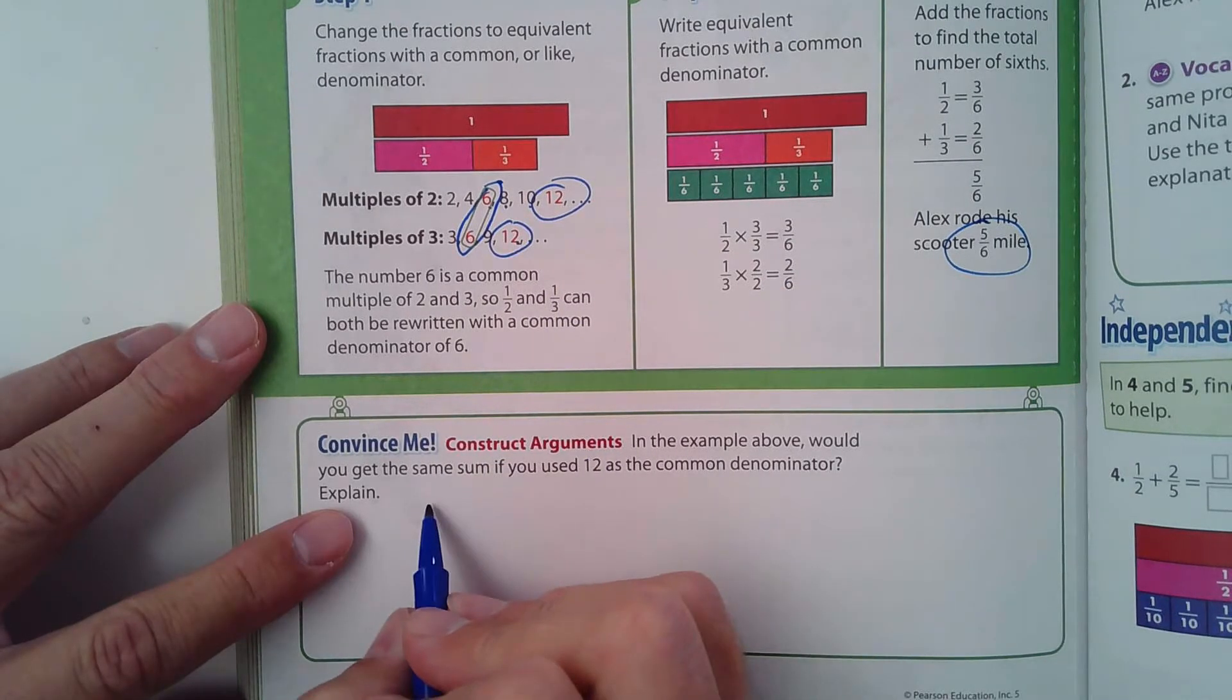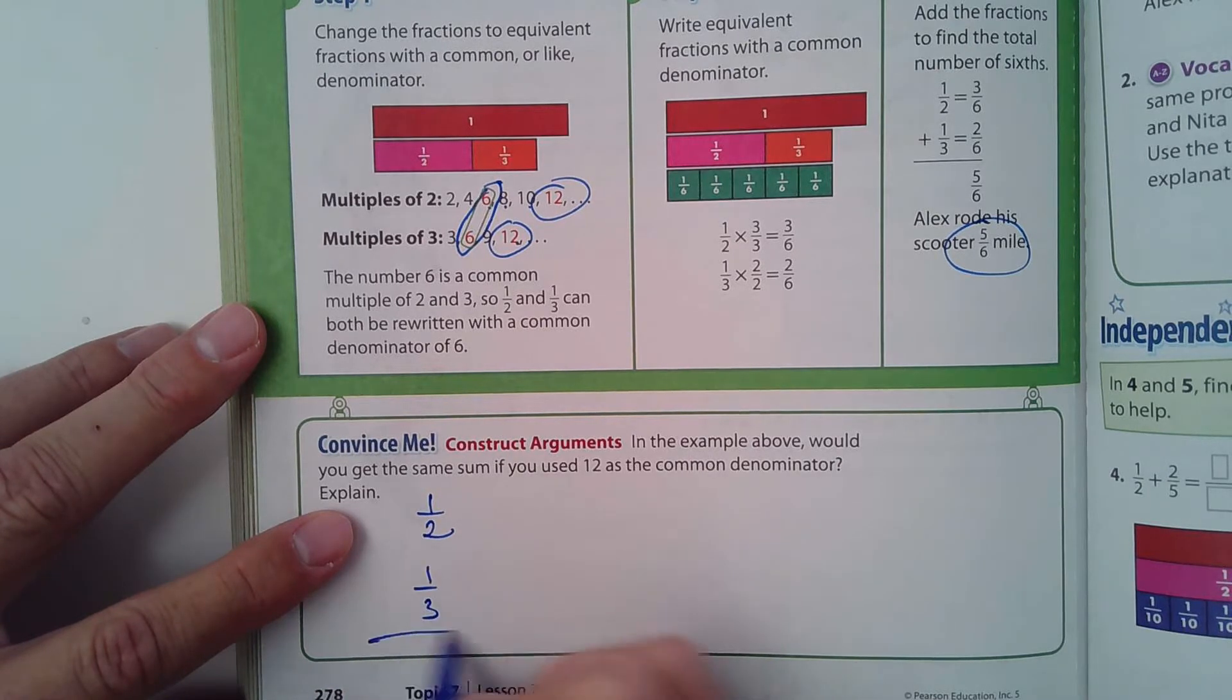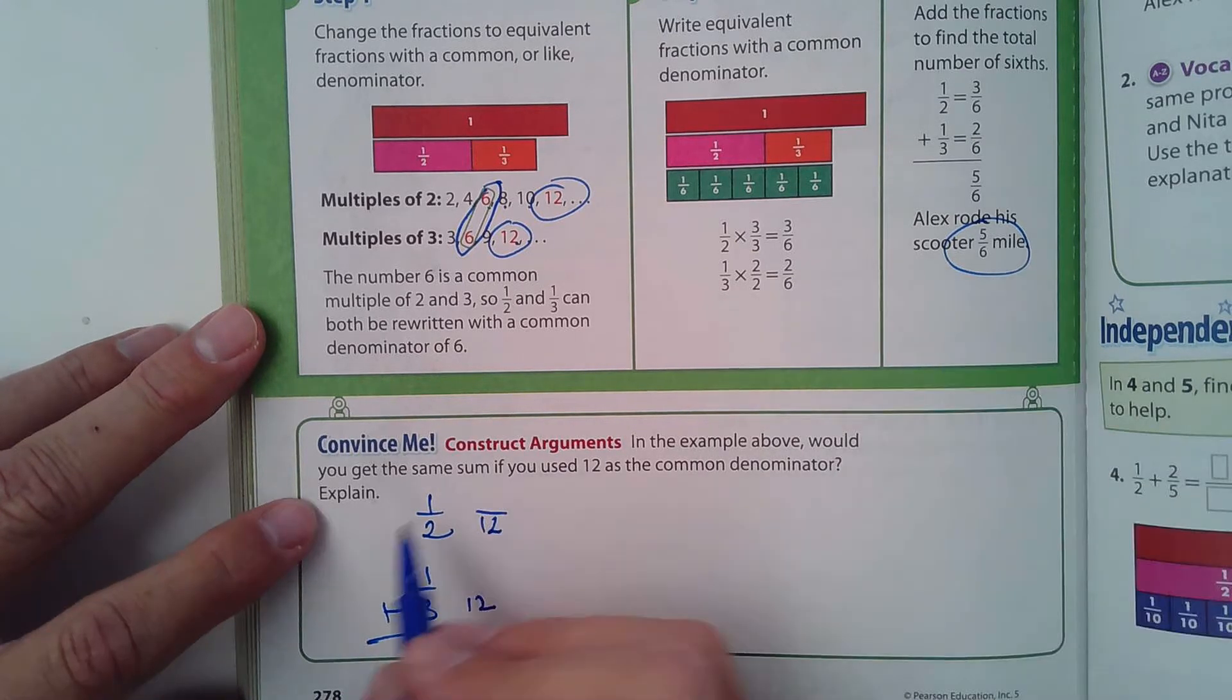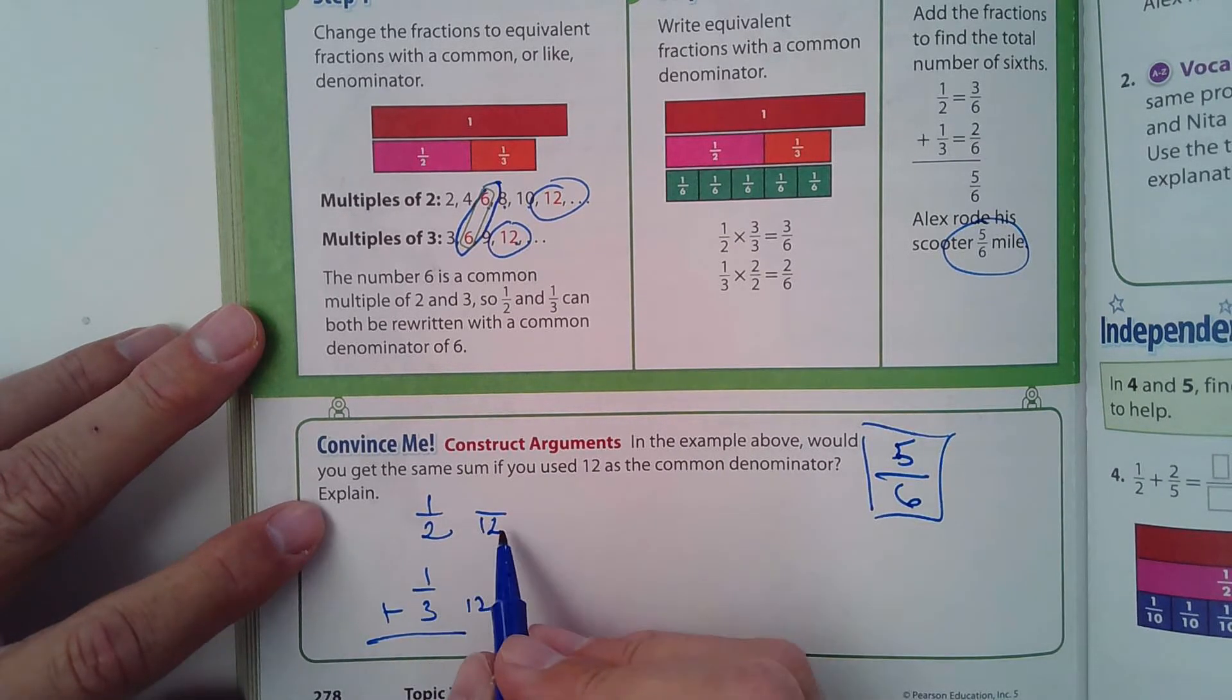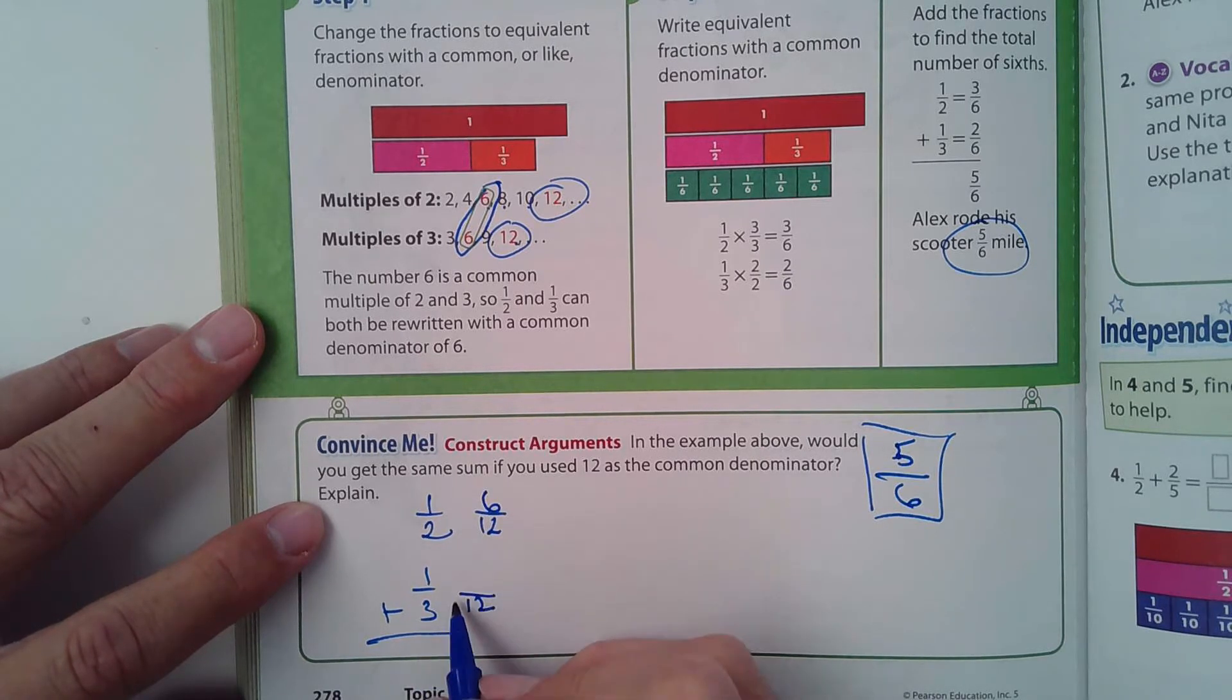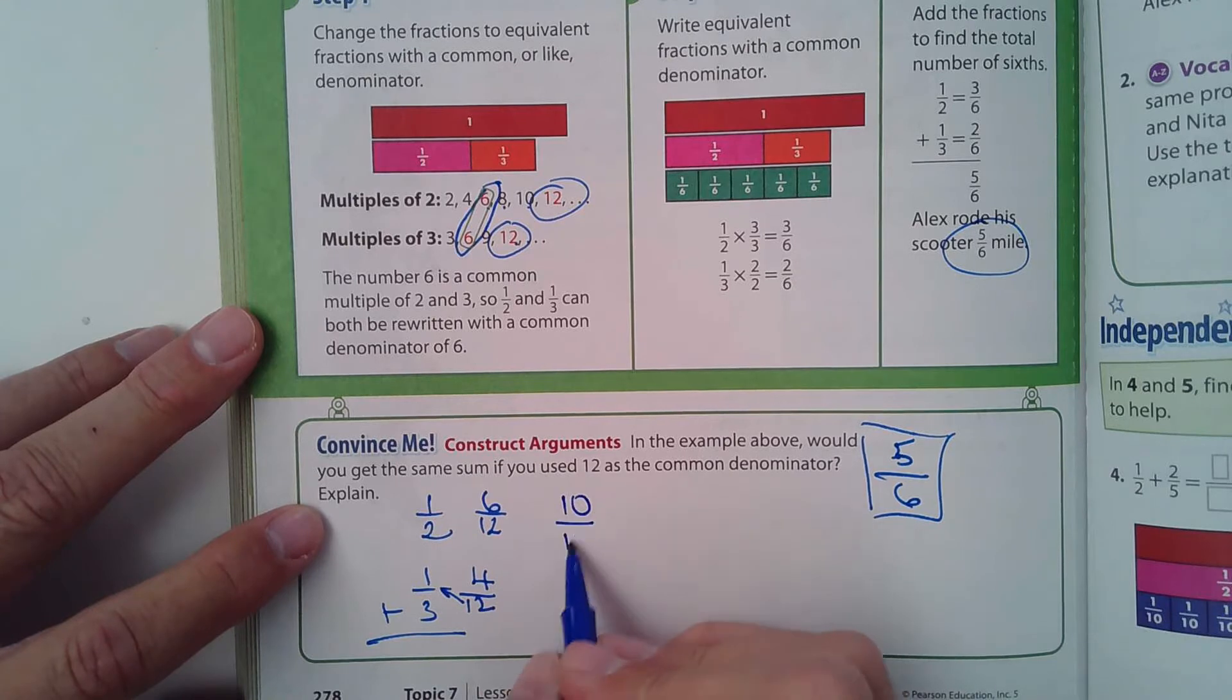We can go ahead and do that. We could do one half and then one third and see what we come up with when adding. If we use 12, will we come up with the same answer? I'll put the five-sixths right here. Okay, so 2 goes into 12 six times, and 6 times 1 is 6. Three goes into 12 four times, 4 times 1 is 4.